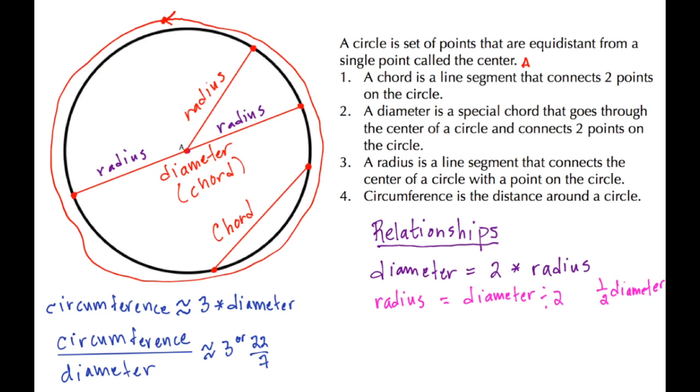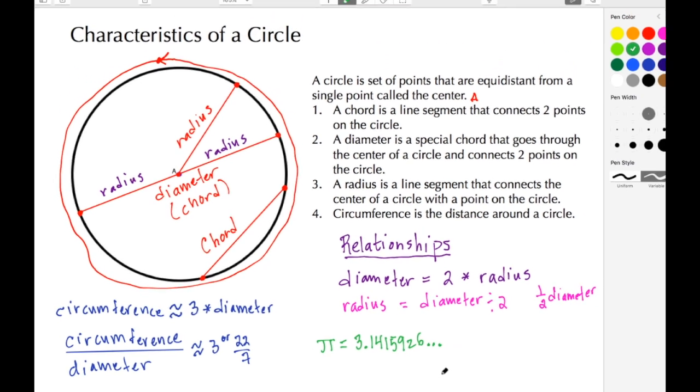As you get further into your studies of circles, you'll learn about something called Pi. Pi is a Greek letter, and Pi is an irrational number, and that number is 3.14159 and it continues on forever.